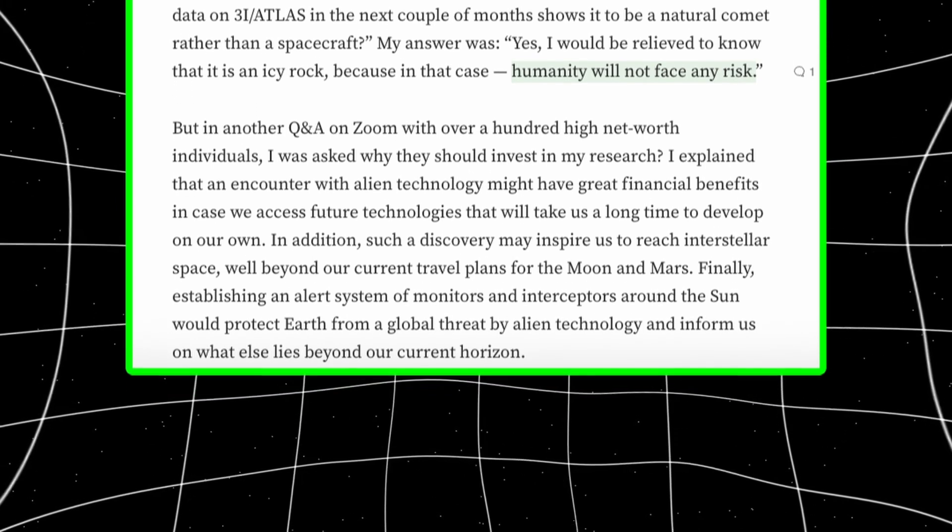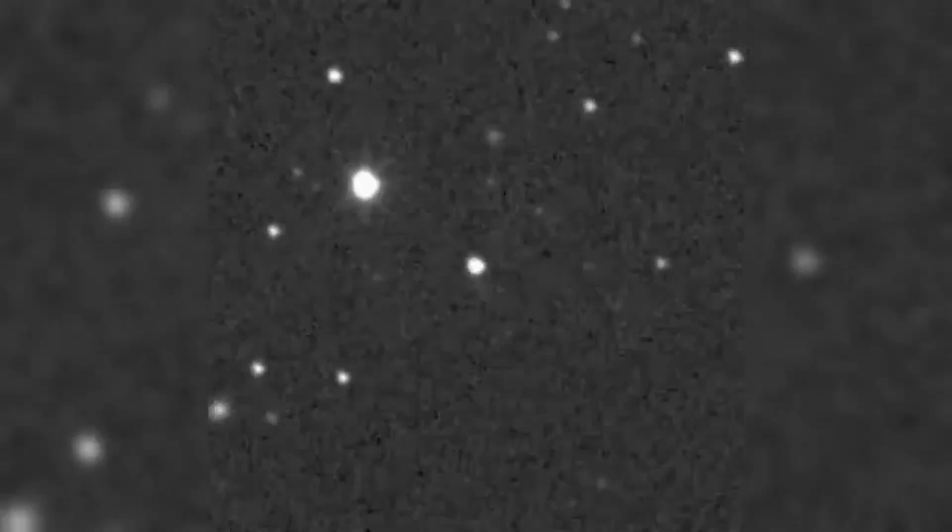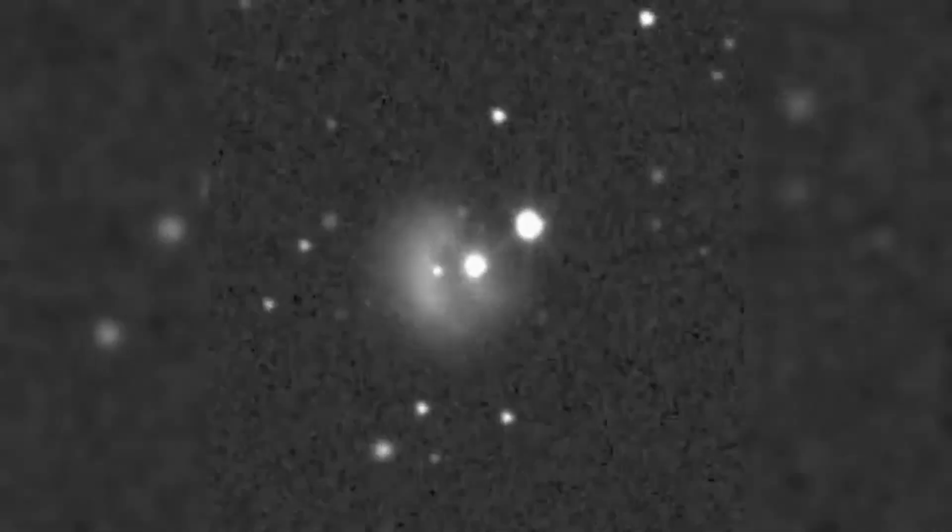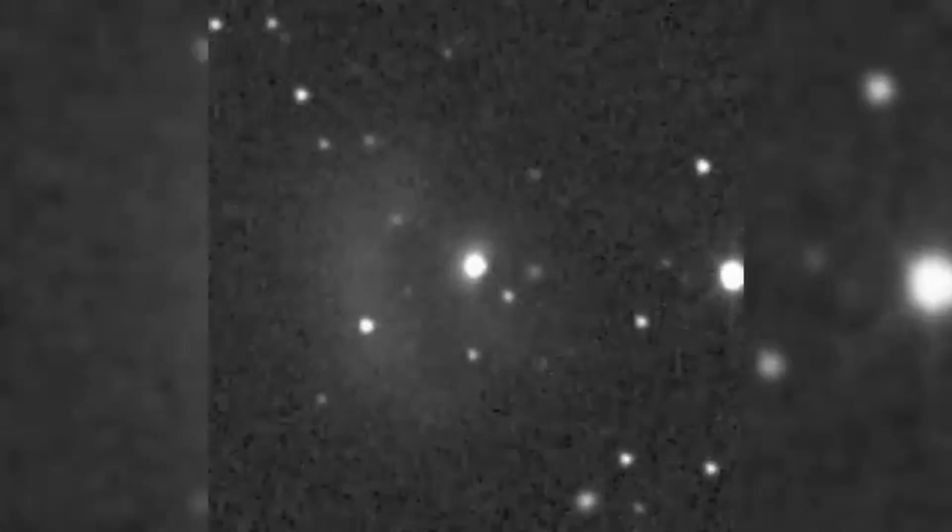And the structure survives all of them. In red, compact core, elongated tail. In green, same. In blue, same. That tells you this isn't a color artifact. It's not a processing trick. It's not chromatic aberration or sensor noise.